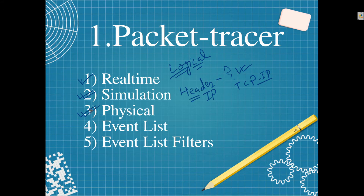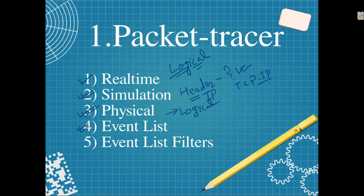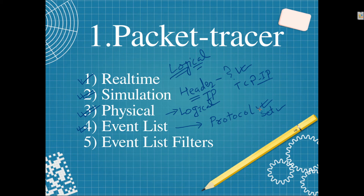Next, we have physical rack and stacking. We have very few labs — one or two — and you can see the physical rack and stack by default. That's an additional benefit Packet Tracer gives you. Then we have the event list. The event list has a huge number of protocols — more than 20 to 30 protocols are enabled by default, free of cost.